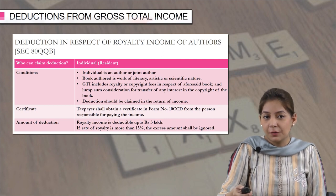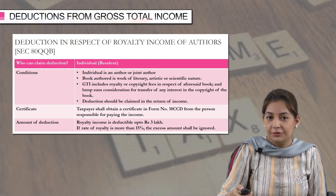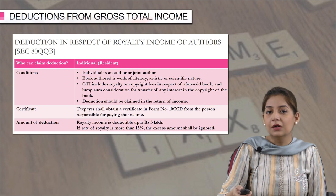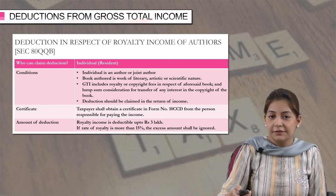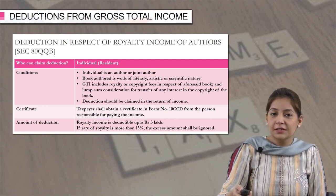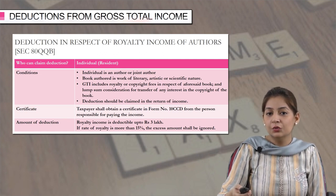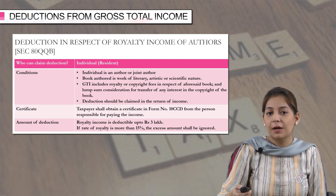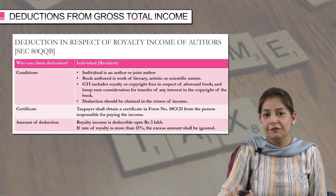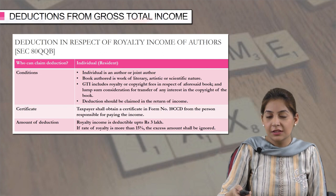The royalty income is deductible up to rupees 3 lakhs. So if your royalty income is 2 lakh 50,000, you can claim the deduction. If it is 3 lakh 50,000, it will be restricted to rupees 3 lakhs only. Also, if the rate of royalty is more than 15 percent, the excess amount shall be ignored. So two limits apply: in terms of amount, up to rupees 3 lakh; and the rate should not exceed 15 percent. This is section 80QQB for deduction in respect of royalty income of authors.